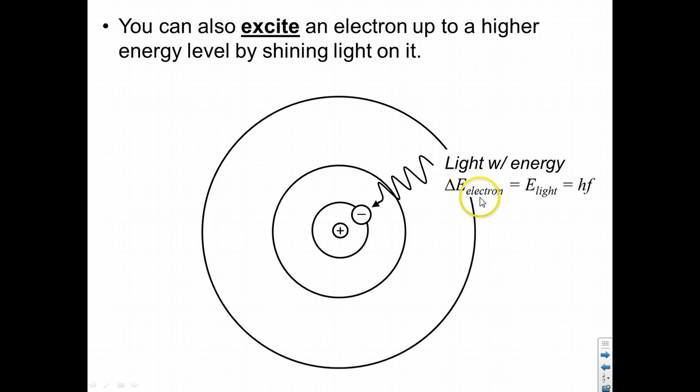If this light has exactly the delta E needed to bump the electron to the next energy level, then this light will be absorbed, and the electron will move up to a higher energy level.